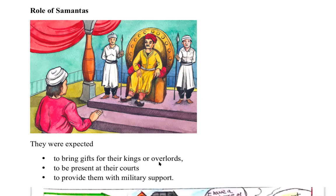In other cases, men from various enterprising families used their military skills to carve out kingdoms, as everybody was fighting and wanted to take over from their overlords and become rulers themselves. For example, the Gurjara Pratihara Hari Chandra and the Kadambas gave up their earlier traditions and took up arms to establish kingdoms in the Karnataka and Rajasthan areas.